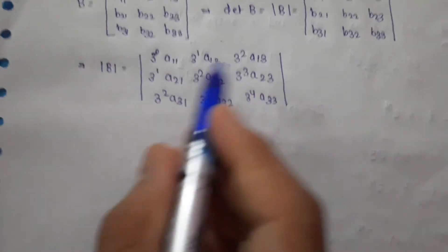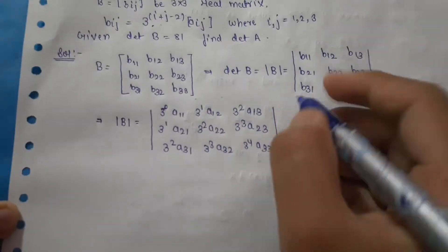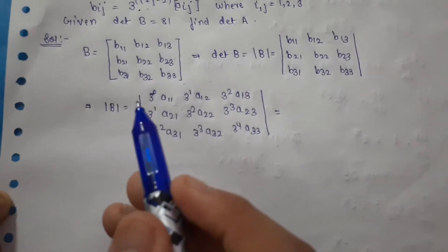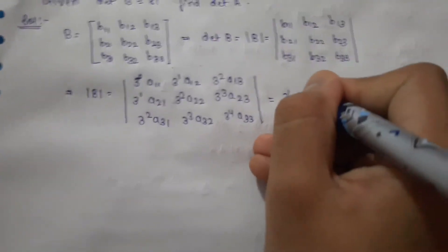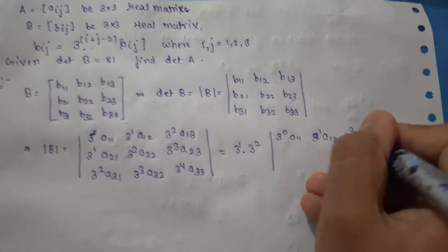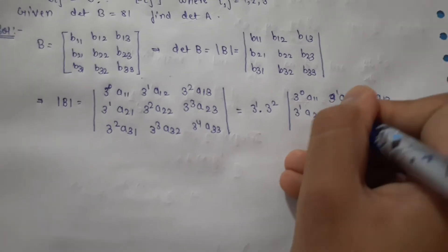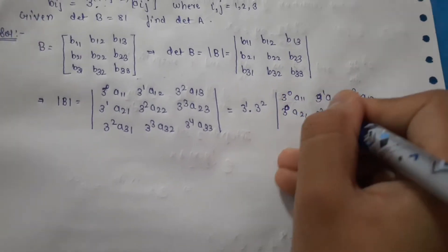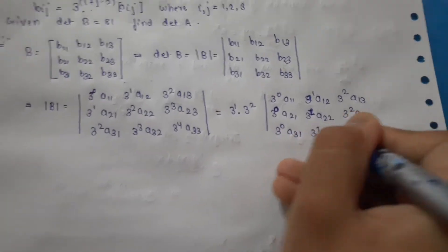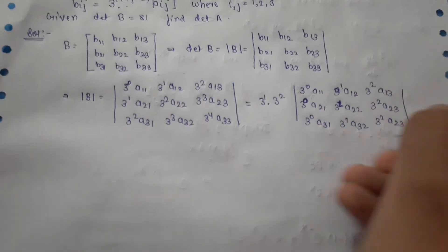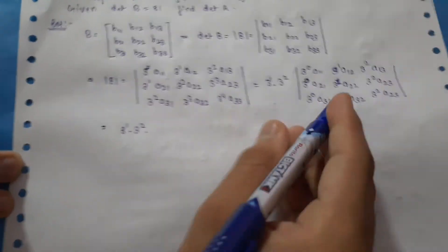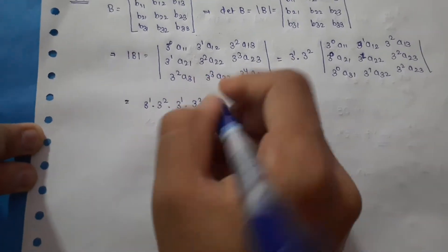Using properties of determinants, we can take scalar multiples common from each row and column. From row 2 we take 3^1 common, and from row 3 we take 3^2 common, giving a factor of 3^1 × 3^2. Then from column 2 we take 3^1 common, and from column 3 we take 3^2 common, giving another factor of 3^1 × 3^2.